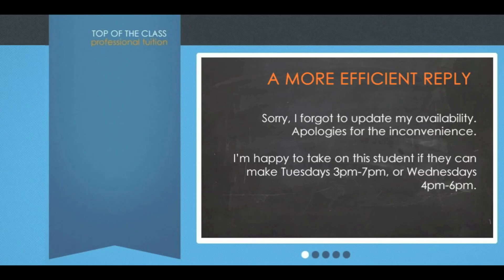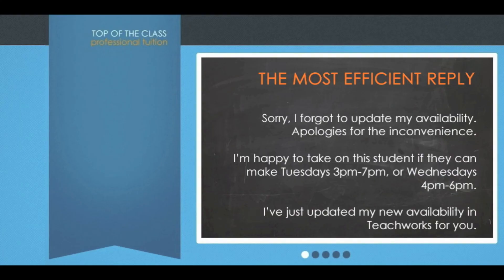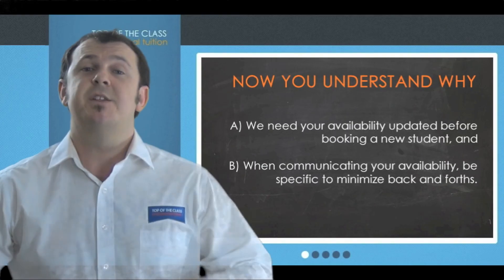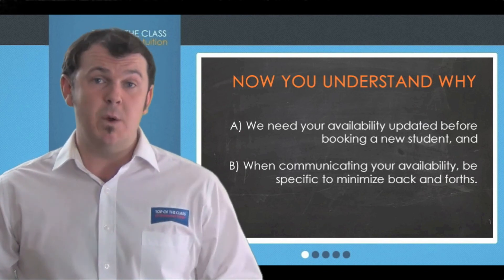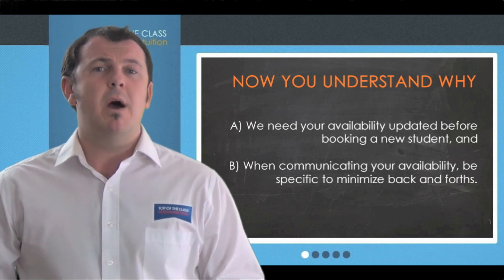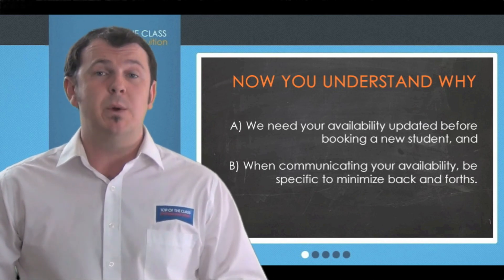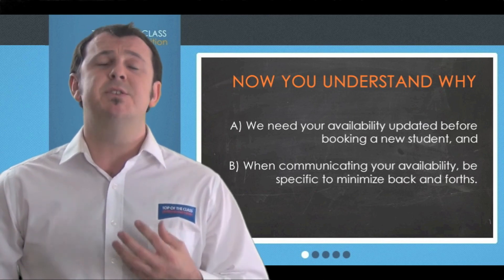So now if Sam was able to anticipate what it is we're thinking — what we're likely to need from him without having to tell him every single time — the response he's likely to word would look a lot more like this: 'Sorry, I forgot to update my availability. Apologies for the inconvenience. I'm happy to take on this student if they can make either Tuesdays from 3 to 7 or Wednesdays from 4 to 6. And I've just updated my new availability in TeachWorks for you.' So hopefully by now you realize why we need to keep your availability updated at all times before we book in a new student for you, and why when communicating your days and times of availability, we need you to be as specific as possible to minimize those back-and-forths.